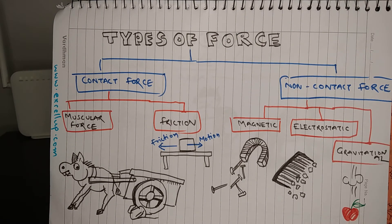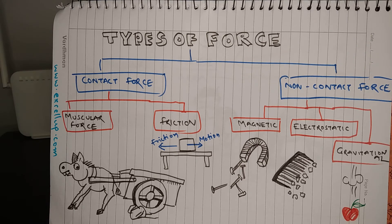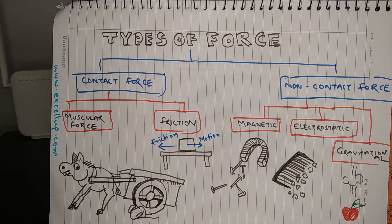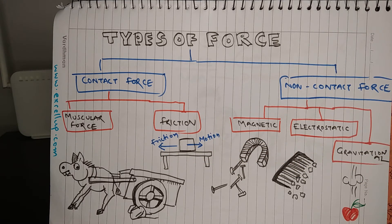There are two types of force: contact force and non-contact force. A force which needs direct or indirect contact with the object in order to be applied is called contact force. Muscular force and friction are examples of contact force. For example, a donkey trying to pull a cart must make contact with the cart through a harness or rope in order to apply its muscular force.